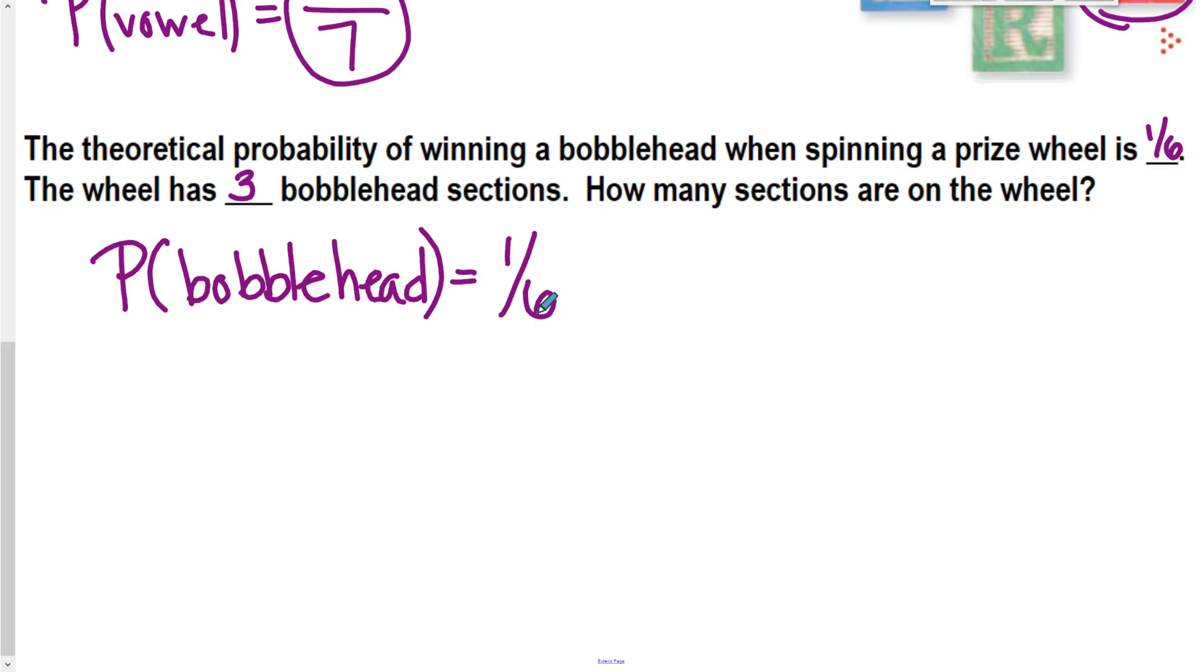So the probability of the bobblehead is one-sixth. I'm giving that in the problem. And I know that I have one out of six chances of hitting a bobblehead, and I know that there are three sections. So that means I need to find out how many sections are in total. So, again, proportions. We still are using a lot of proportions in this unit.